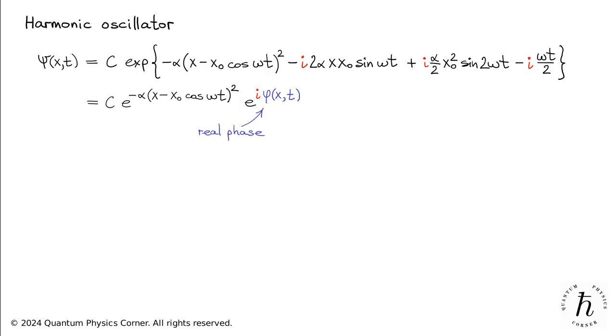Here, phi is a real function of x and t, serving as the wave function's phase. Now, by taking the modulus of the wave function and squaring it, the phase factor disappears, leaving us with a much simpler expression.